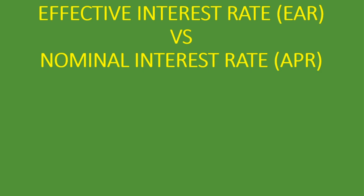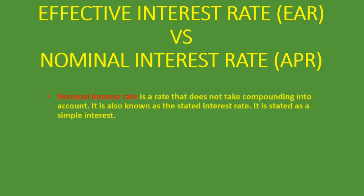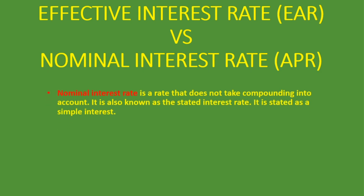What are these rates? Nominal interest rate is a rate that does not take compounding into account, so it's a simple interest rate. It is also known as the stated interest rate — it is stated as a simple interest rate where compounding is not taken into account.